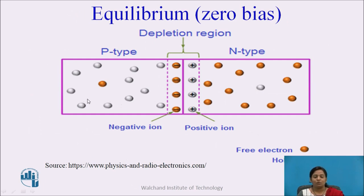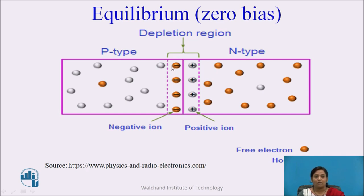In the equilibrium mode, no external supply is given to the device. At the initial condition, the majority charge carriers — that is the electrons from N-side — will diffuse into the P-side. The atoms from N-side that donate these electrons get converted into positively charged ions. The atoms from P-side that accept these electrons get converted into negatively charged ions. These positively and negatively charged ions accumulate near the junction, forming a layer of immobile ions — positive towards N-side and negative towards P-side. This layer is called the depletion region.